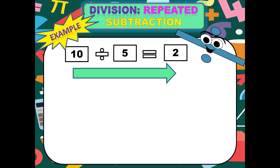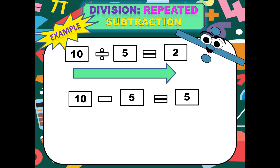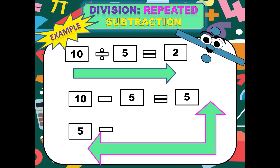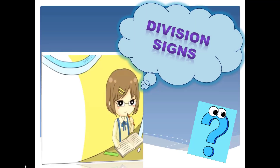اب ہم اس example کو check کریں گے as repeated subtraction۔ Class 2، 10 ہمارے پاس total number ہے۔ 10 minus 5 = 5۔ اب اس answer میں سے again 5 minus کریں گے تو answer آئے گا 0۔ یہ subtraction کا process ہم تب تک کرتے جائیں گے جب تک answer 0 نہ آ جائے۔ Count کریں — آپ نے 10 میں سے 2 times 5 کو subtract کیا اور answer 0 آیا۔